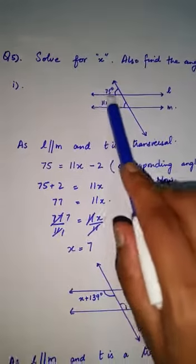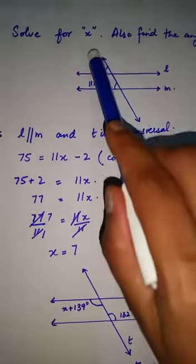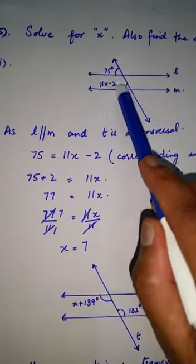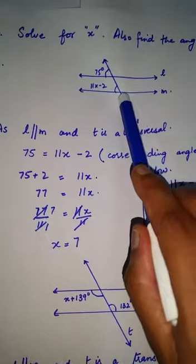in the question shows two parallel lines l and m, and two angles are mentioned: 75 degrees and the other angle is 11x - 2. We will apply the properties to solve.